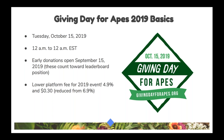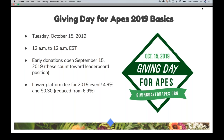To quickly recap the basics: Giving Day for Apes is on Tuesday, October 15th. It starts at midnight Eastern Standard Time and ends at midnight Eastern Standard Time. Early donations open on Sunday, September 15th at midnight — these are real-time donations, not pledges, and they count toward your Giving Day totals. This year we have a lower platform fee of just 4.9% plus 30 cents, which includes credit card processing fees, so you'll see even more of your donations.